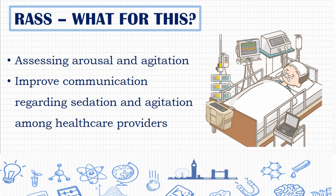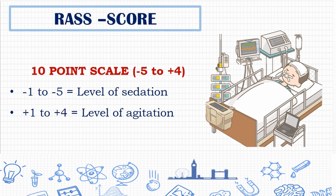In the slide we can see the scoring. RASS is a ten-point scale from minus five to plus four. The negative scores, minus five to minus one, assess the level of sedation. The positive scores, plus one to plus four, assess the agitation level of the patient. At neutral zero, the patient is alert and calm.